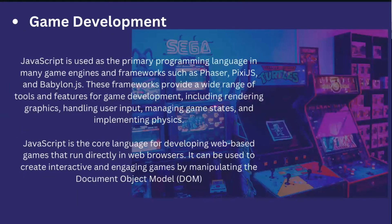For game development, you might know about Valorant and Dota 2. Their great graphics come from physics implementations using famous JavaScript libraries like Phaser.js. JavaScript is used as a primary programming language in many game engines. You might have played the Chrome dinosaur game when there's no internet — that is also built with JavaScript: the speed increases constantly and the score is counted, all made by JavaScript. Web apps like Flappy Bird, which every developer is making as a project, are also made by JavaScript.